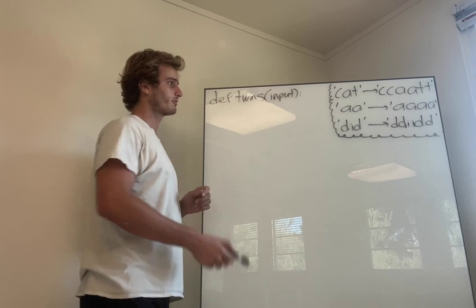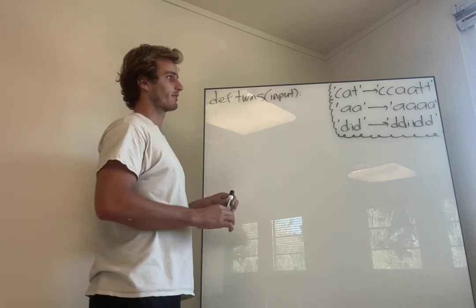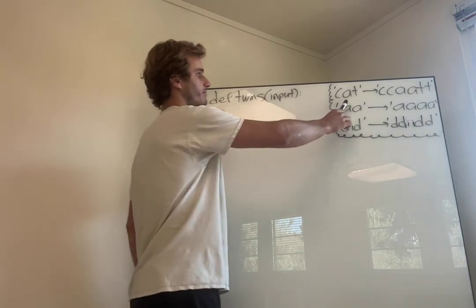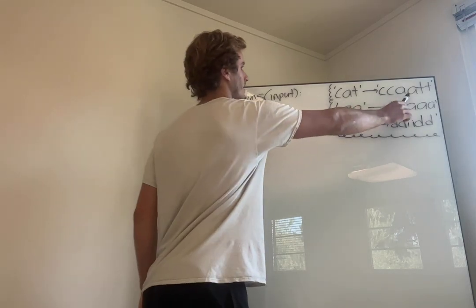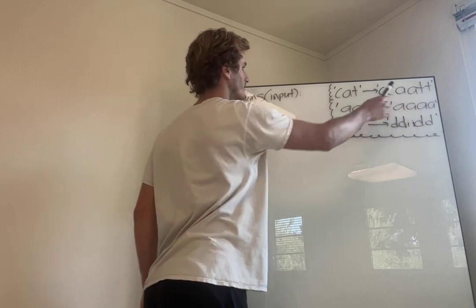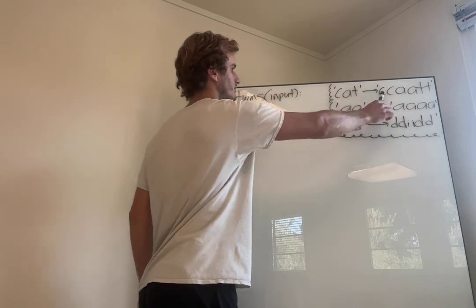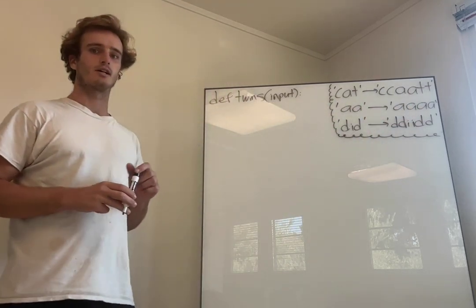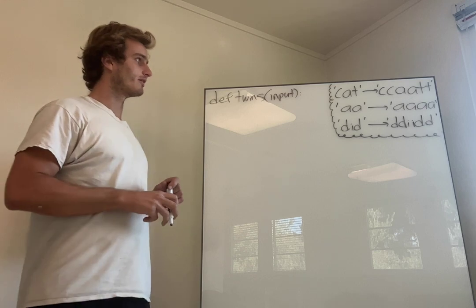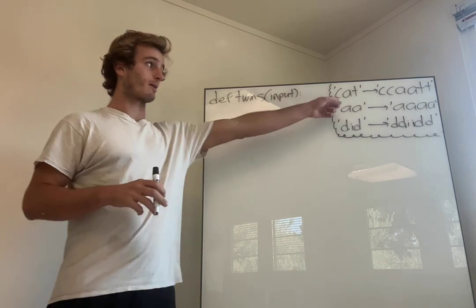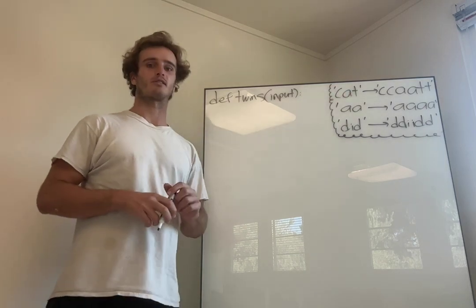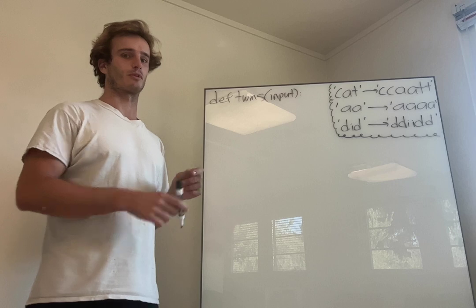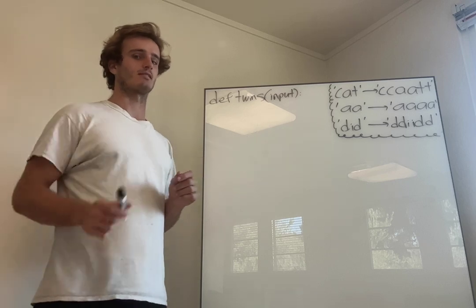I've drawn some examples up on the board here. For example, the string 'cat' would become 'CCAATT'. So we're repeating the C twice, the A twice, and the T twice. It's important to note this is the output we want and not something like 'cat-cat' or 'C-A-T-C-A-T'.